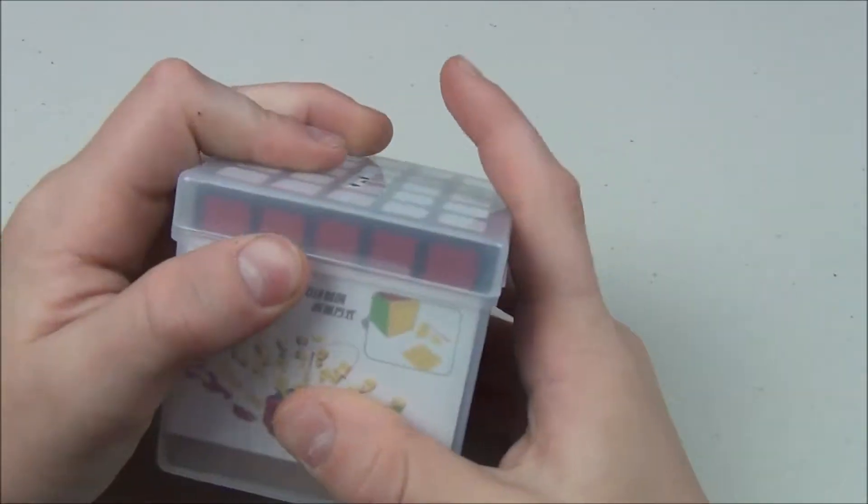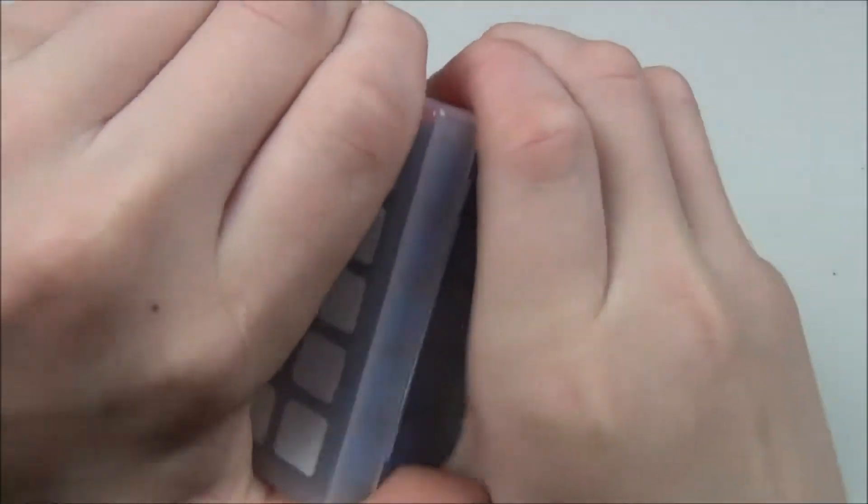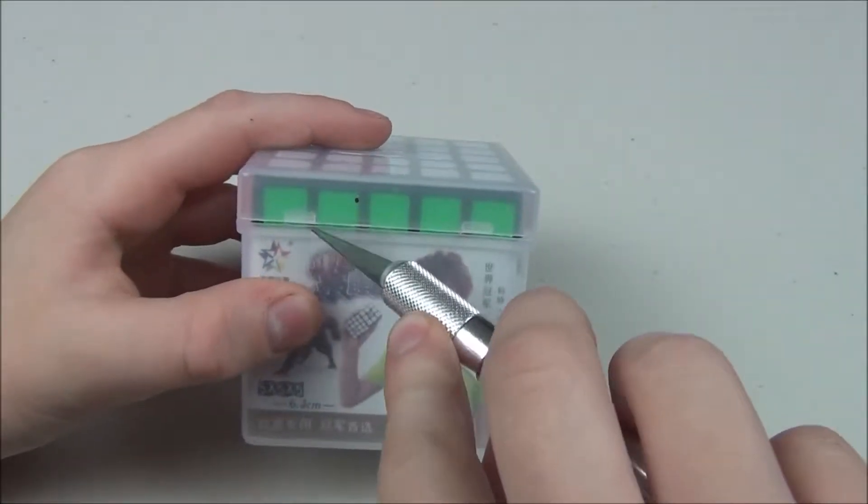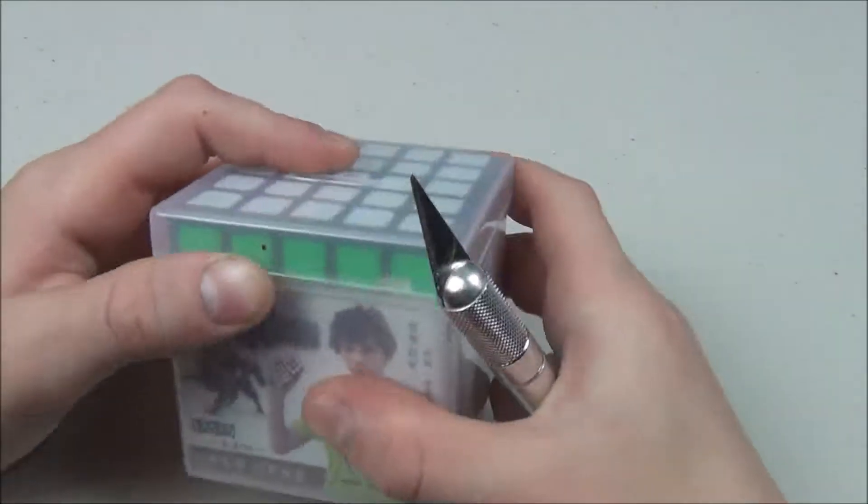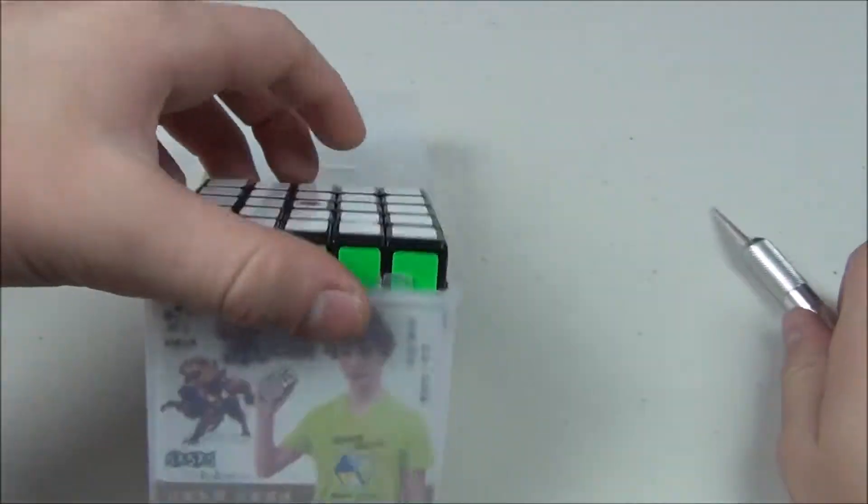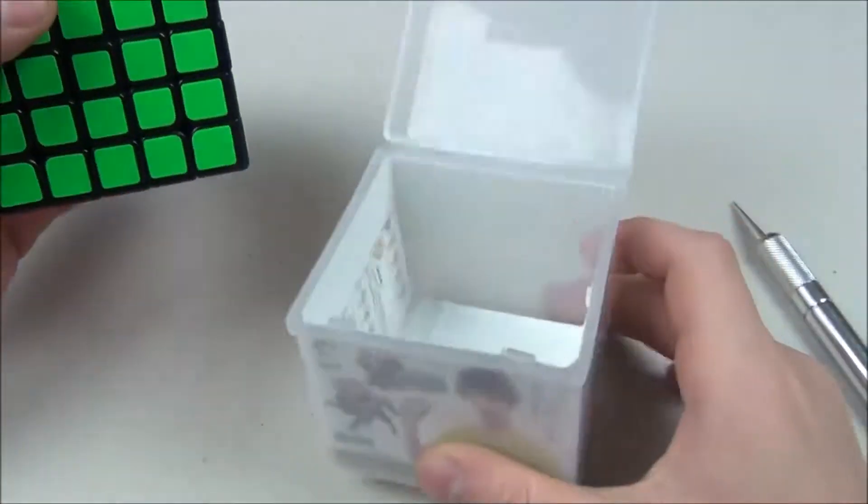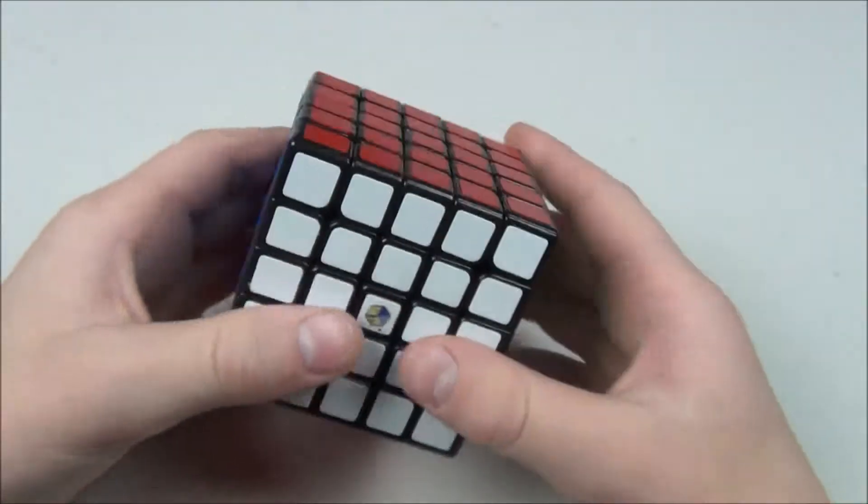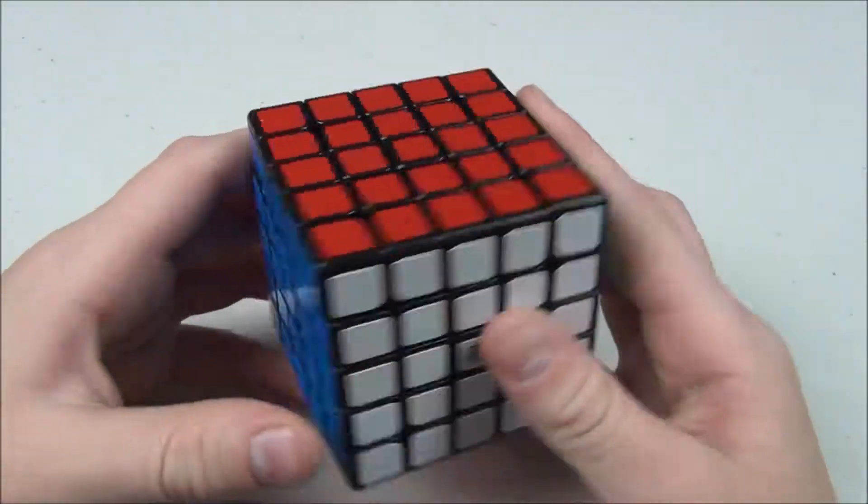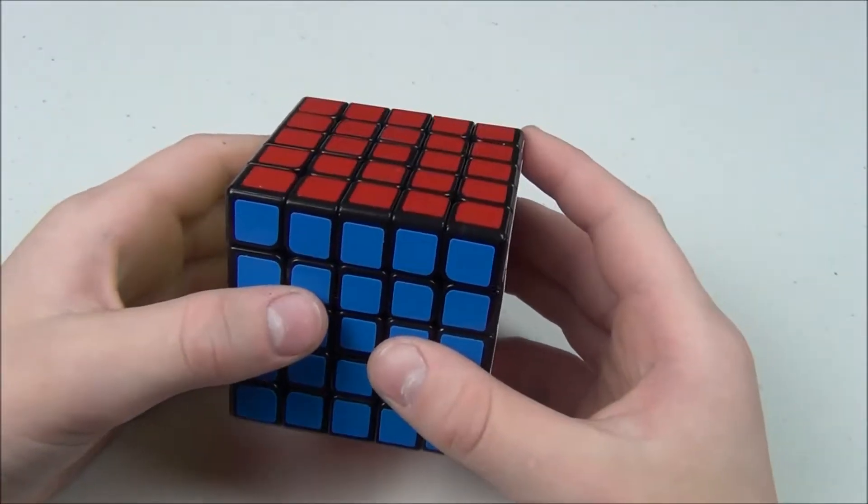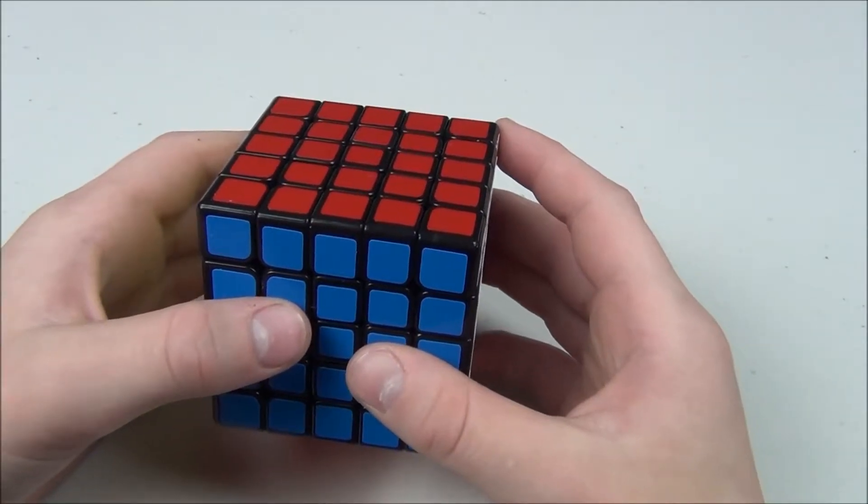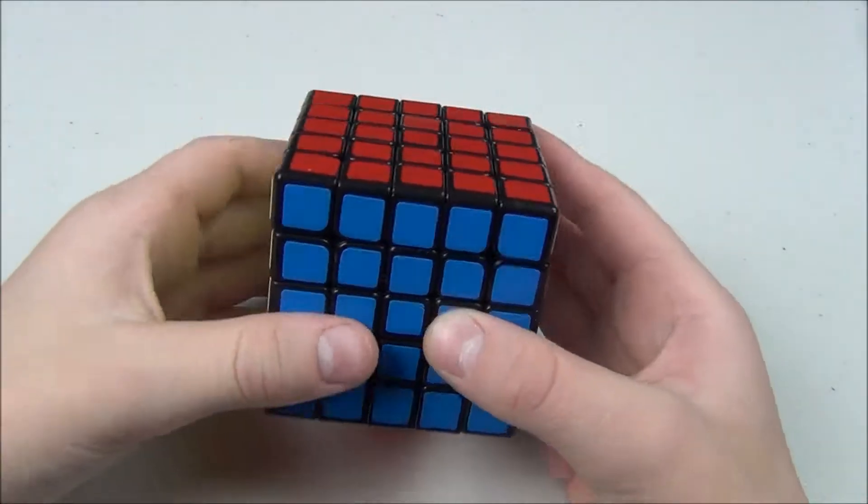Let's go ahead and get on with the main event, which is the Yushin 5x5. Looks like we're going to have to cut it here. There we go. So here it is and the reason why I got this cube was because I've heard that for its price, which is only about $16 or $17, it's a very, very excellent 5x5, one of the best on the cheaper end of cubes.